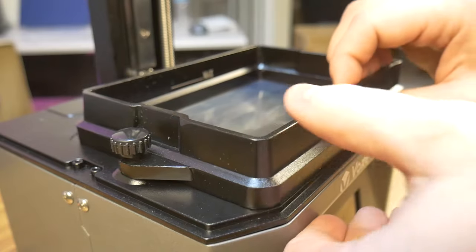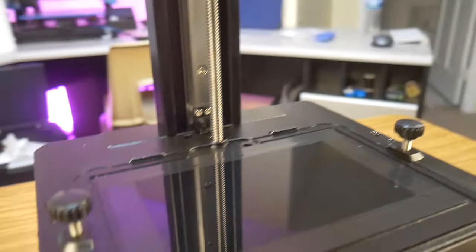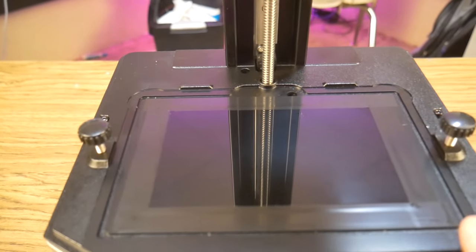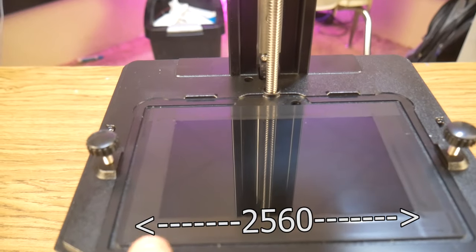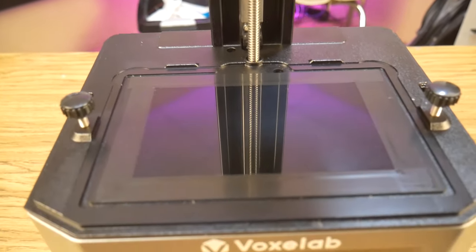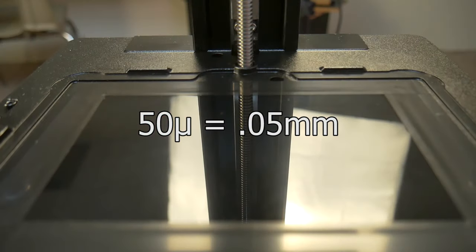Before we get started, let's go over some specifications. The Voxelab Proxima sports a 2K monochrome screen with a pixel resolution of 2560 by 1620, which gives it an effective pixel size of 50 microns or 0.05 millimeters.